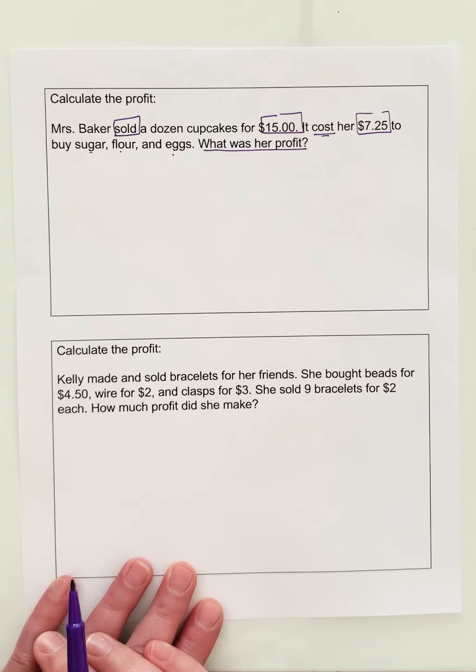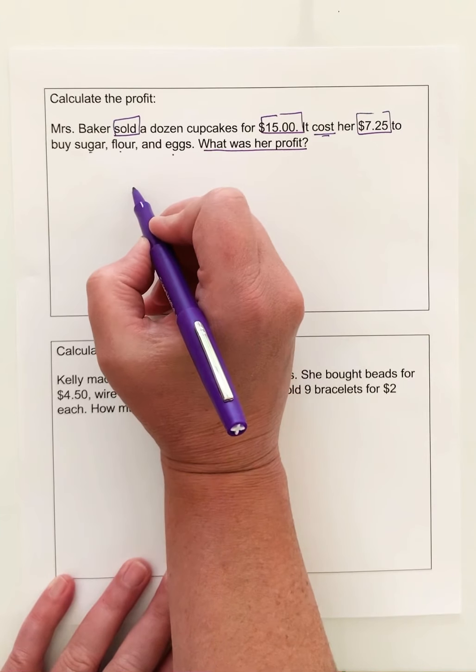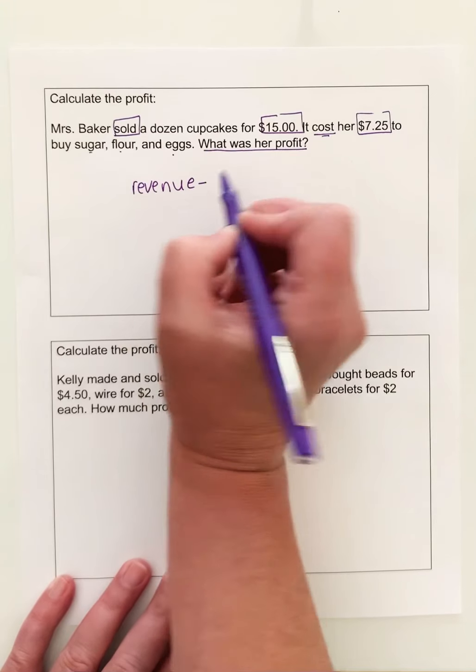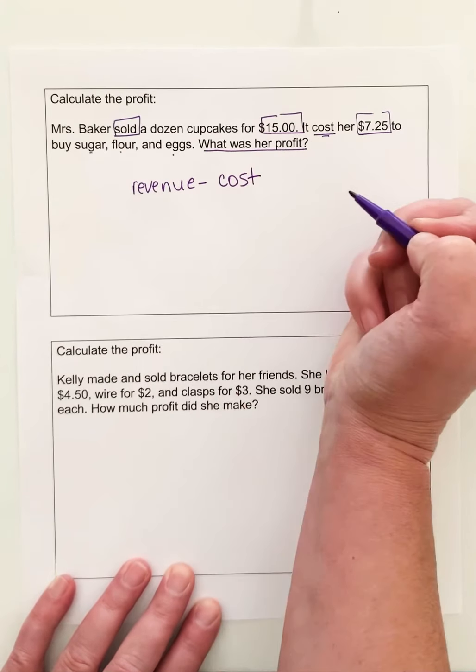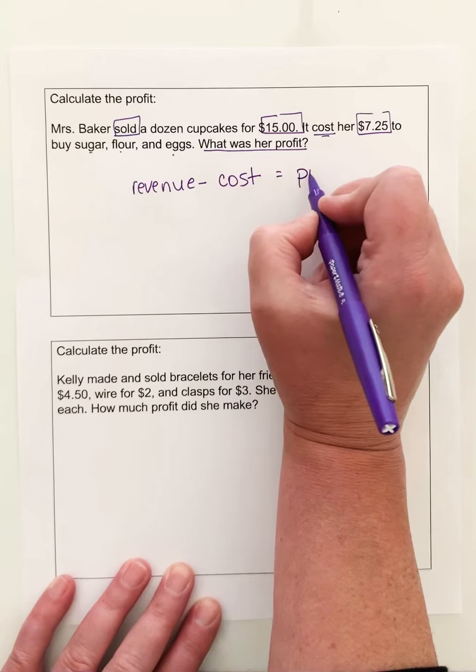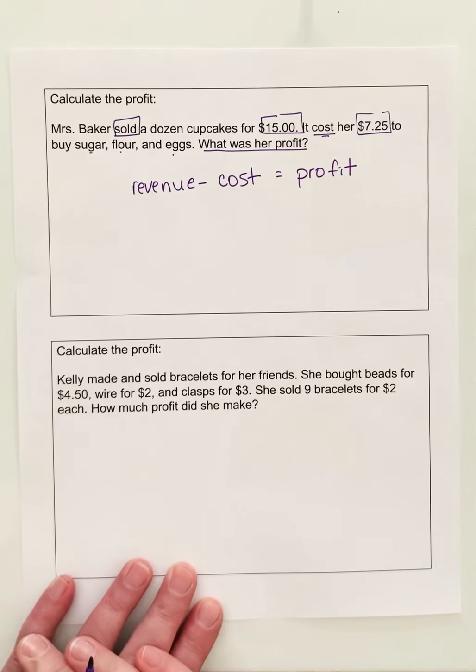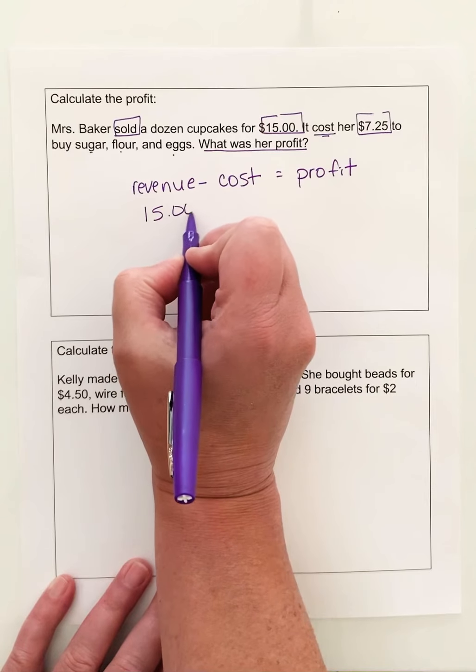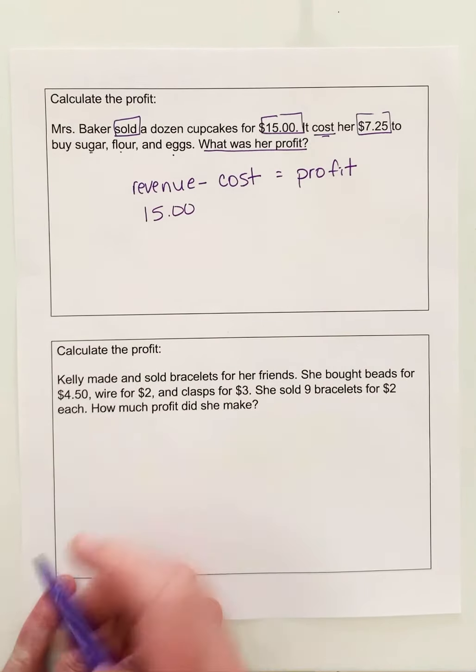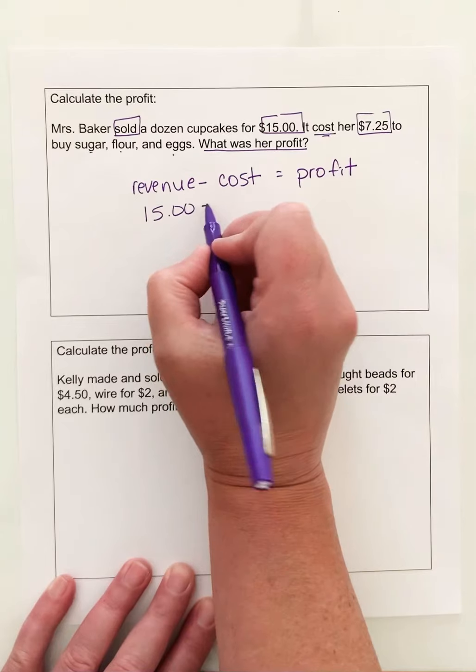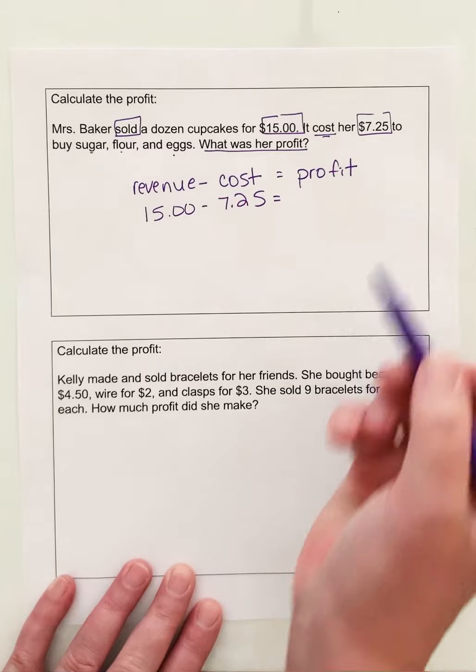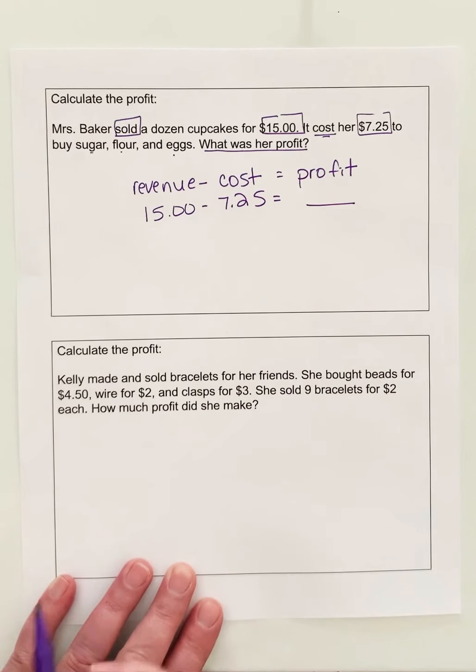Here's our question, what was her profit? So to calculate profit, we start with her income or her revenue. We are going to subtract her costs to buy her supplies, and what is left is her profit. Now I'm just going to plug in my numbers. So she sold cupcakes for $15. That was her income. But she had to buy sugar, flour, and eggs, and that cost her $7.25. So when I subtract that from $15, what is left is our profit.